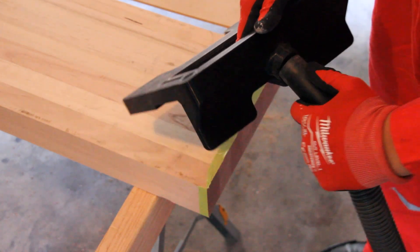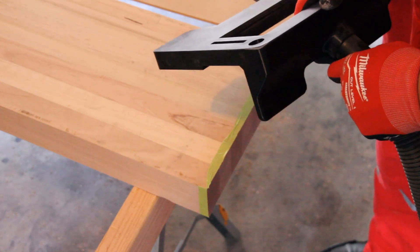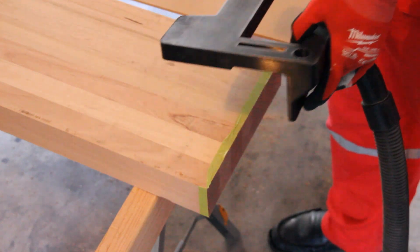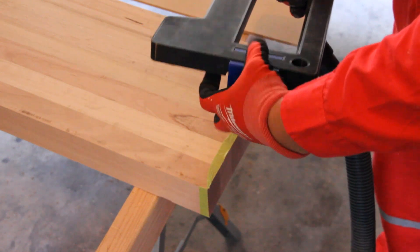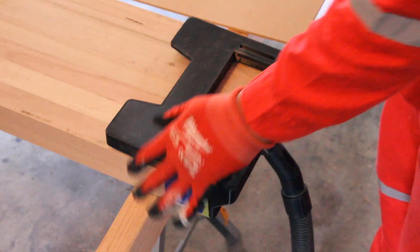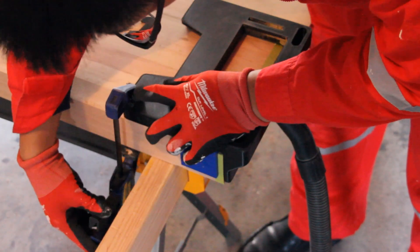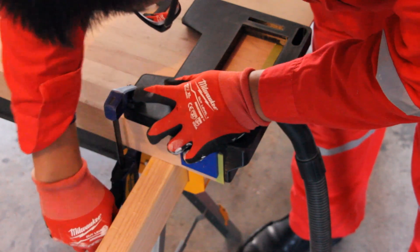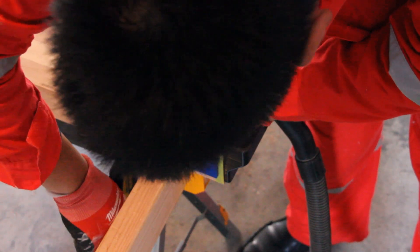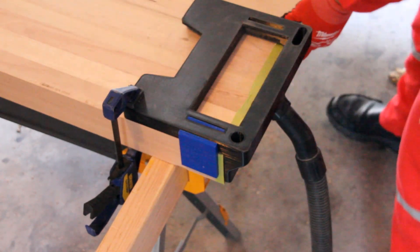Once all the timber treads were cut to the correct size, I then can use my 3D printed jig. I can then start routing all the timber treads individually. My 3D printed jig included a removable spacer to ensure that it is spaced correctly from the timber edge. Once I've clamped the jig and attached the vacuum, I can begin to start routing.